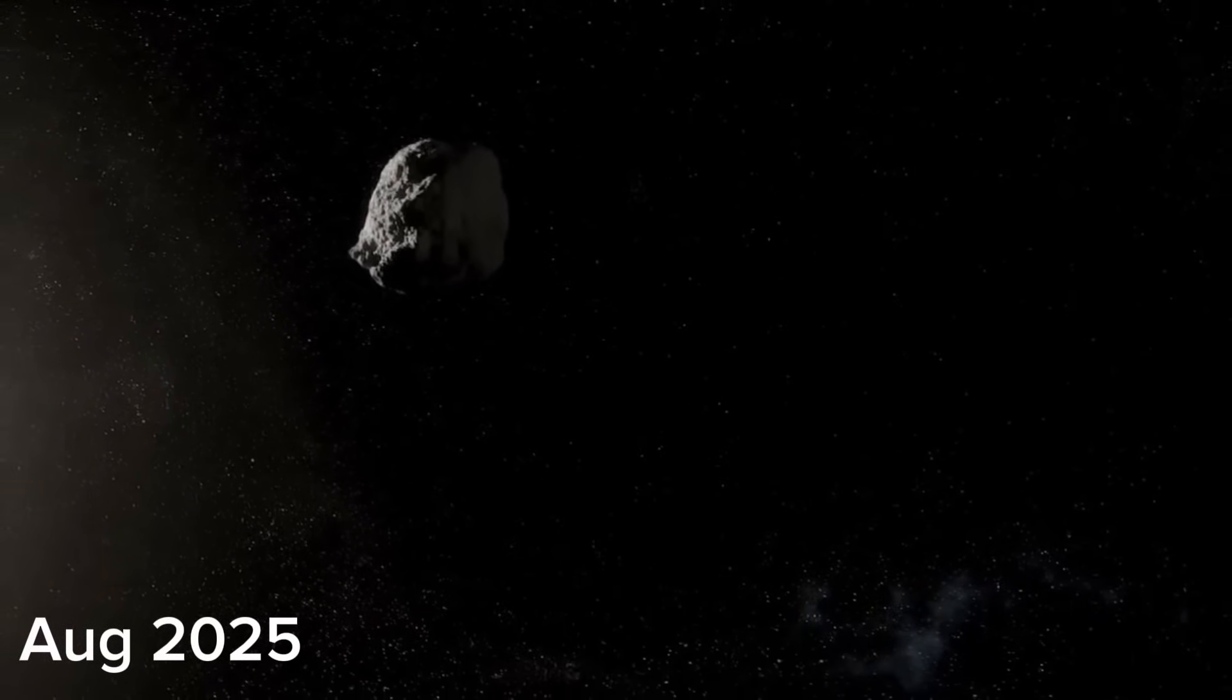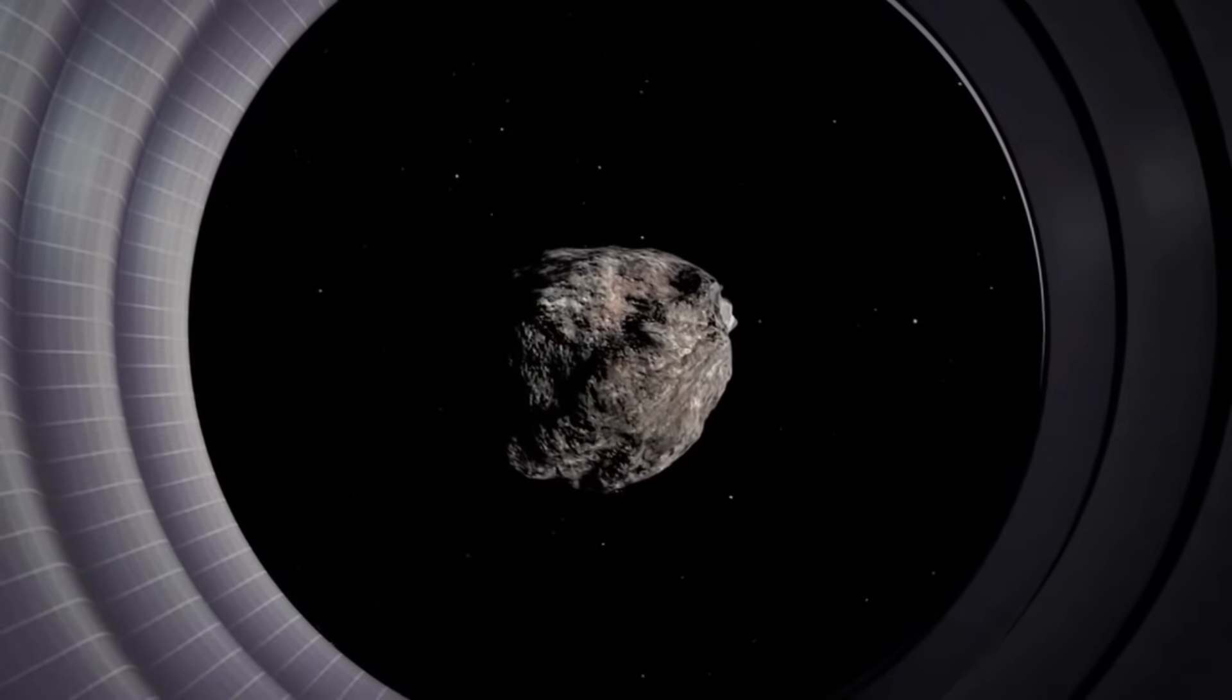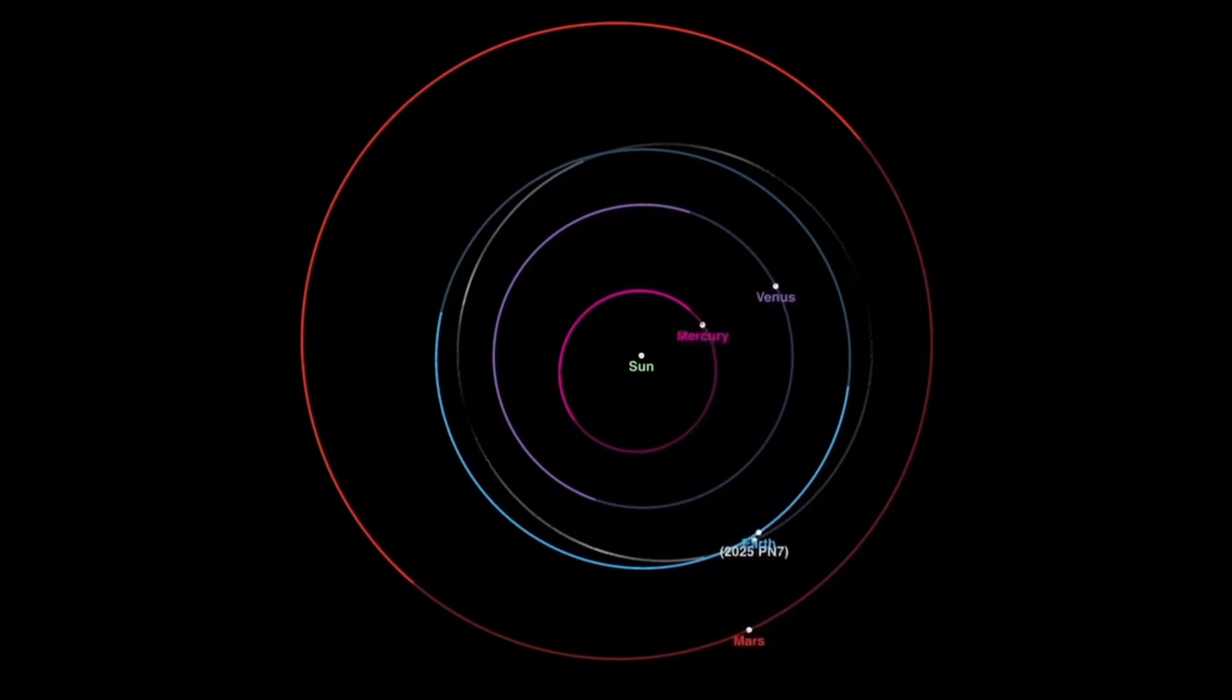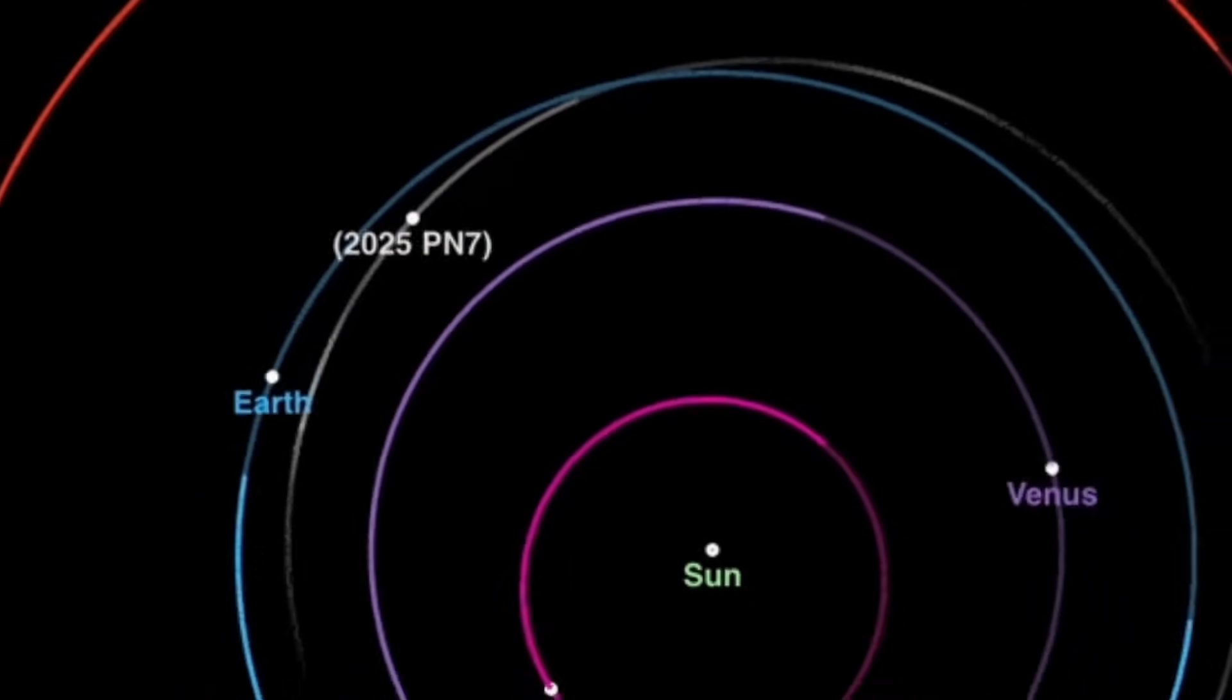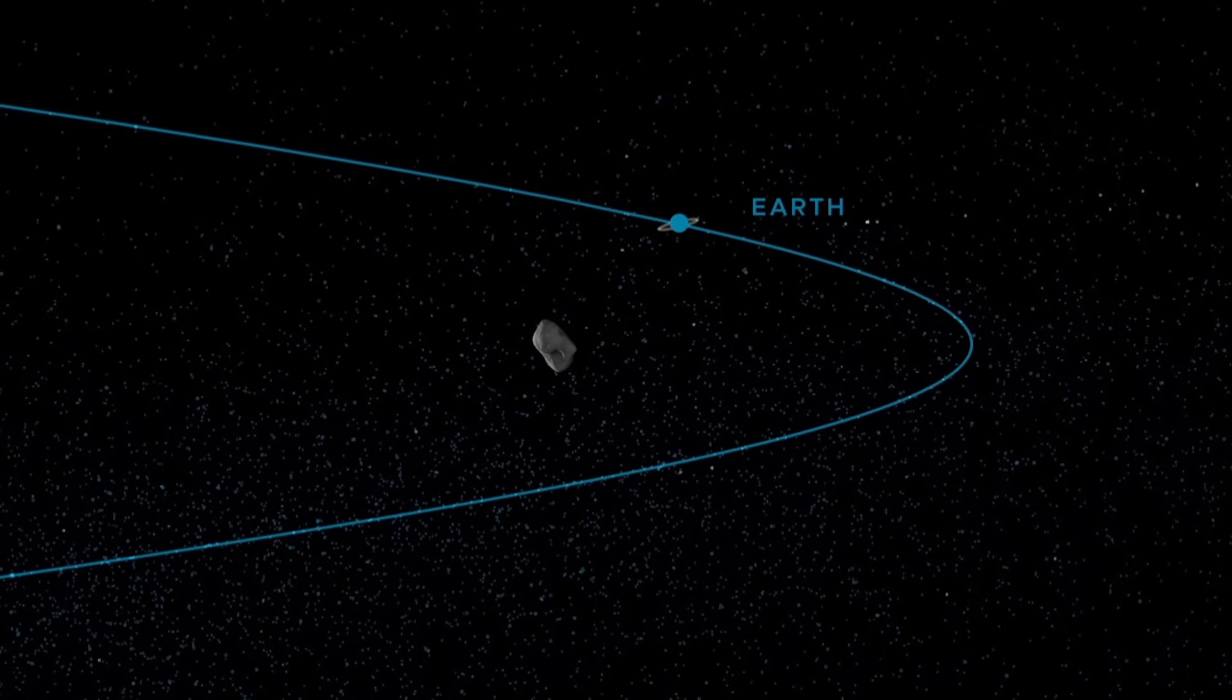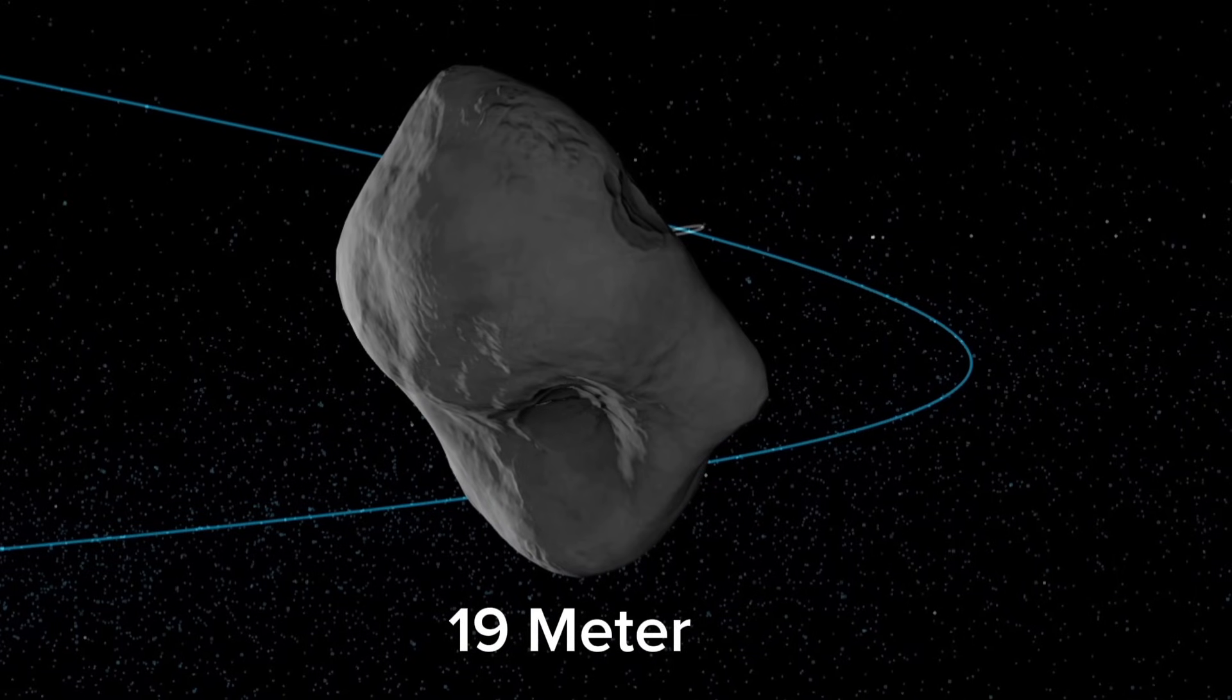2025 PN7 was discovered in August 2025 using the Pan-STARRS telescope on Hawaii. Archival data suggests it's been lurking in a nearly Earth-synced orbit for many decades. Some estimates go back around 60 years or more. According to current estimates, this object is very small, roughly 19 meters in diameter, about the size of a modest house.